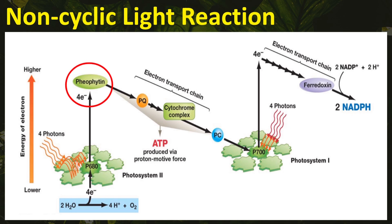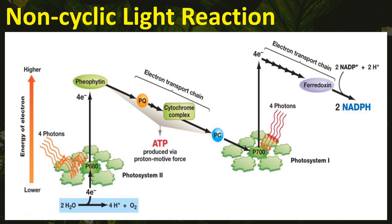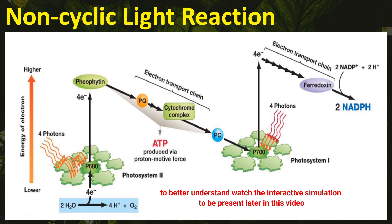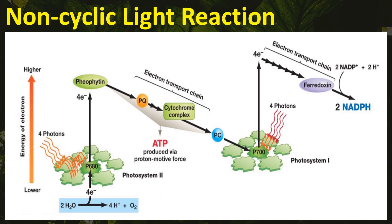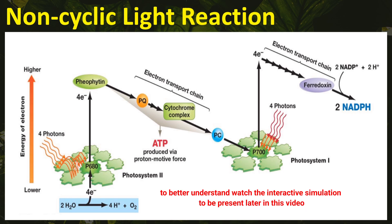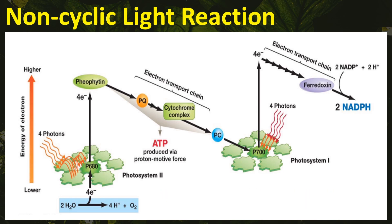Pheophytin carries excited electrons from Photosystem 2 and dumps them off at the plastoquinone. The high-energy electrons cascade a series of electron carriers or electron transport chain. Water splits into oxygen and hydrogen. Oxygen is released as oxygen gas, which is one of the byproducts of photosynthesis. Hydrogen ions temporarily stay within the thylakoid space and contribute to the hydrogen gradient. Chemiosmosis occurs as hydrogen ions flow down the electrochemical gradient through ATP synthase. Chemiosmosis is the process of diffusion of ions across a selectively permeable membrane.